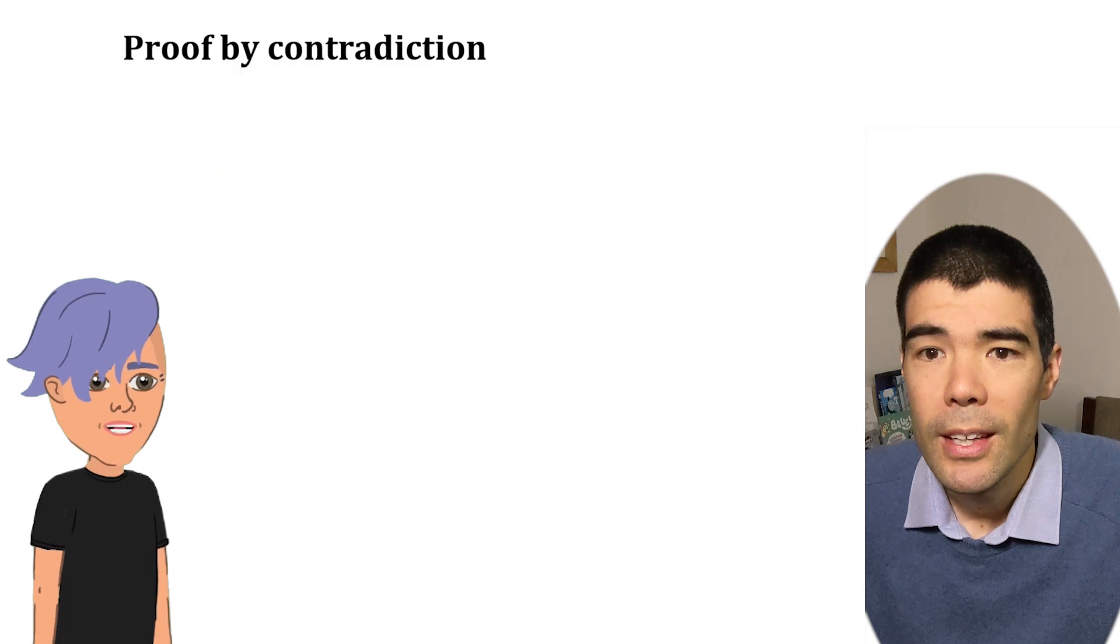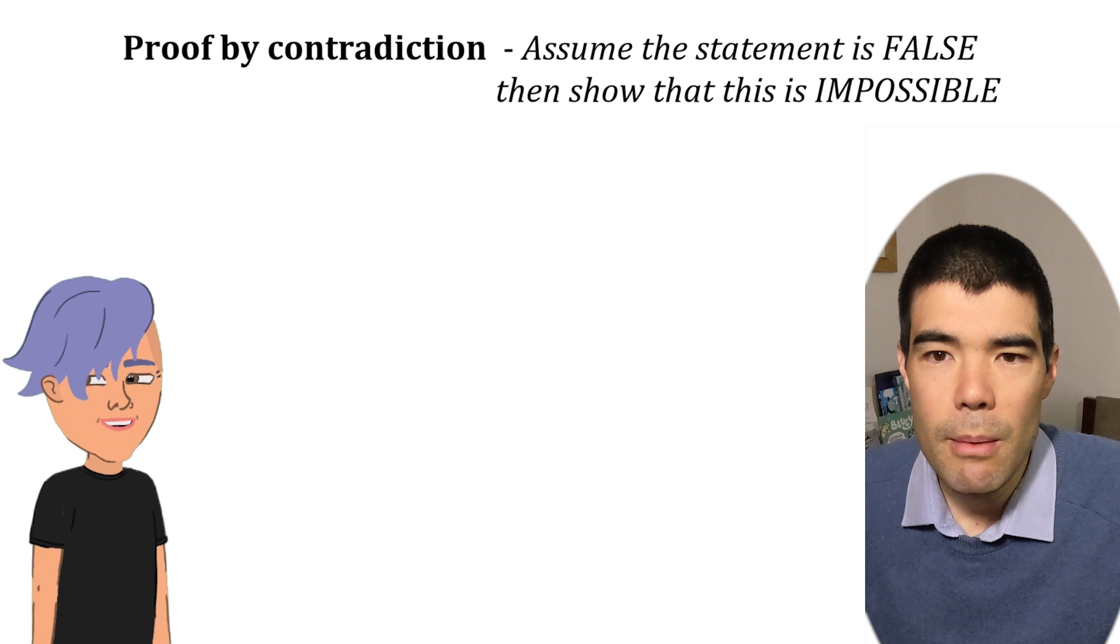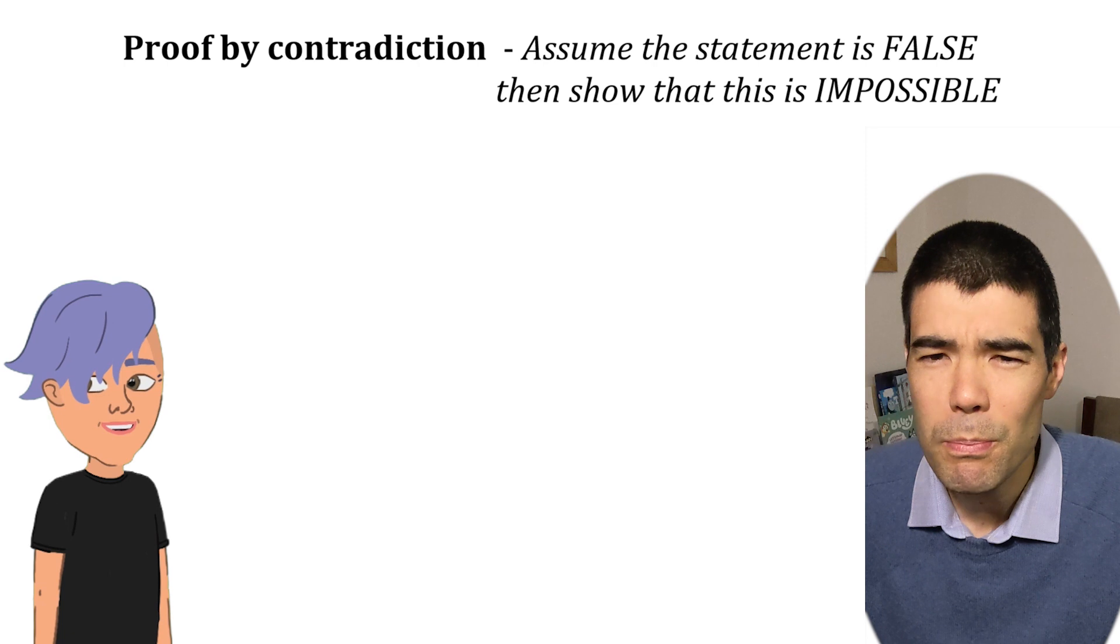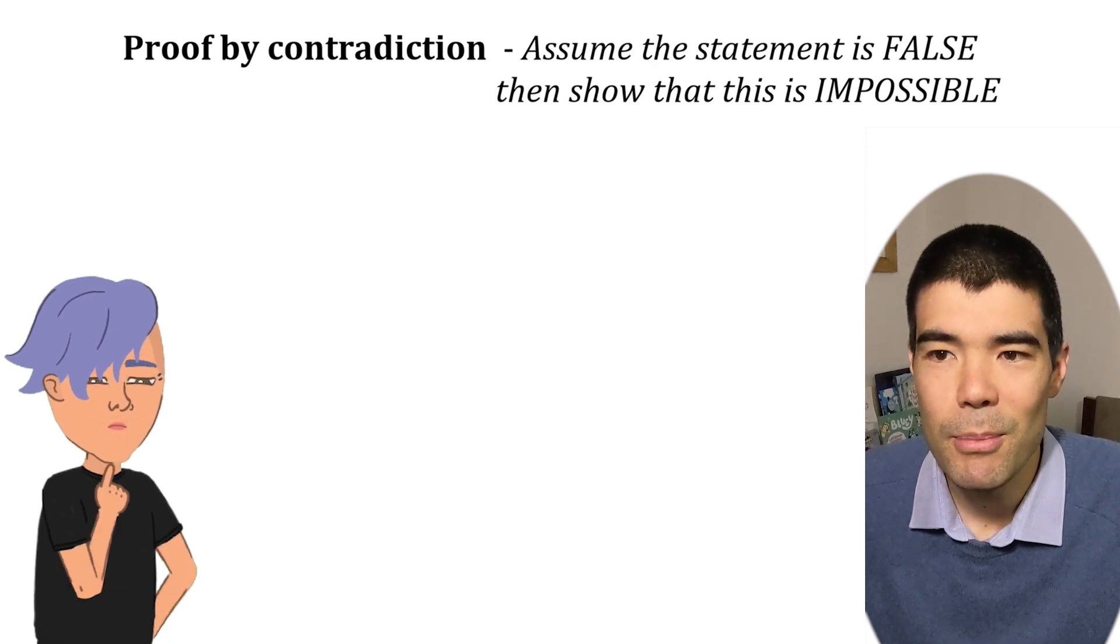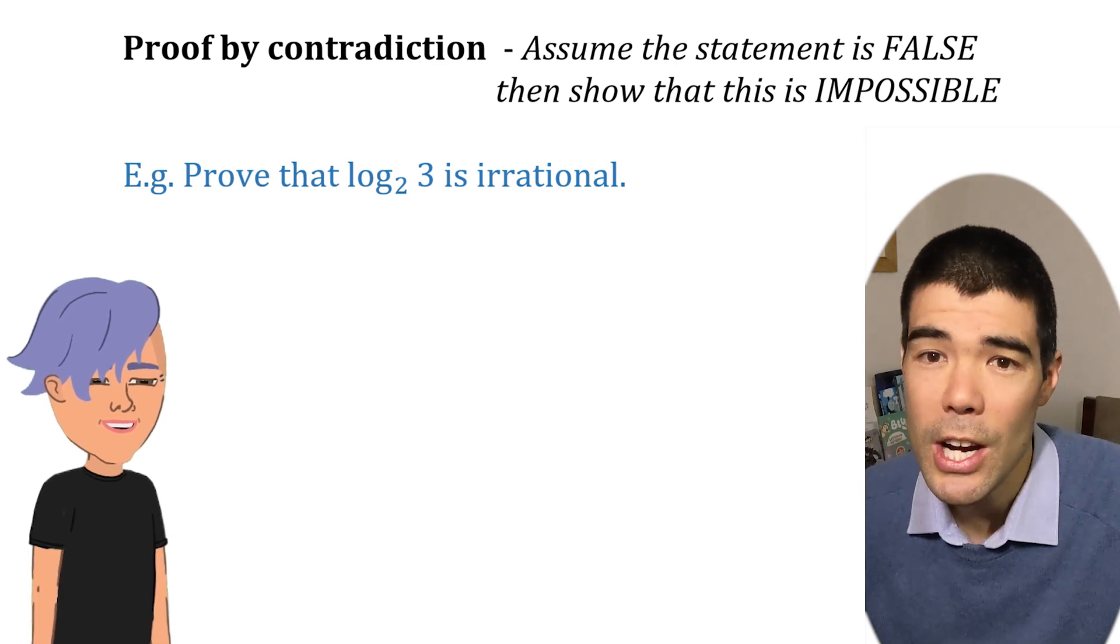Alright, what's proof by contradiction? This is a good one. You start by assuming the statement you're trying to prove is false, then show that this is not actually possible, because it would break the laws of mathematics. Ooh, I like it.